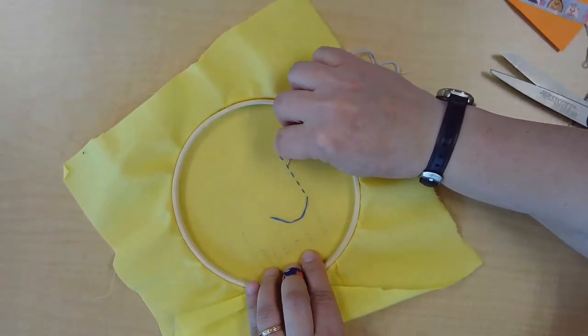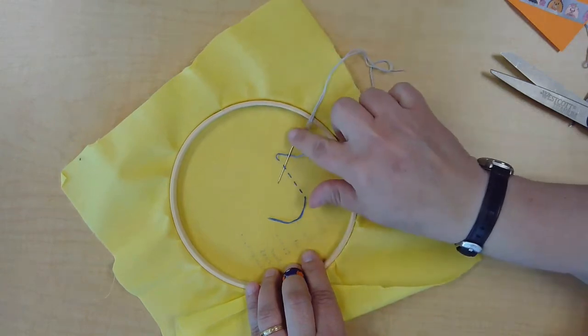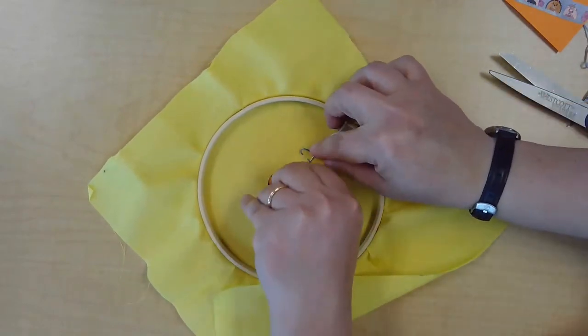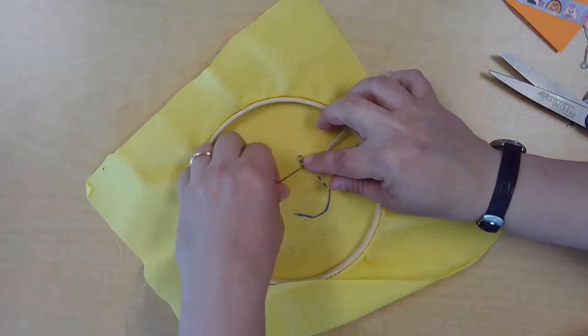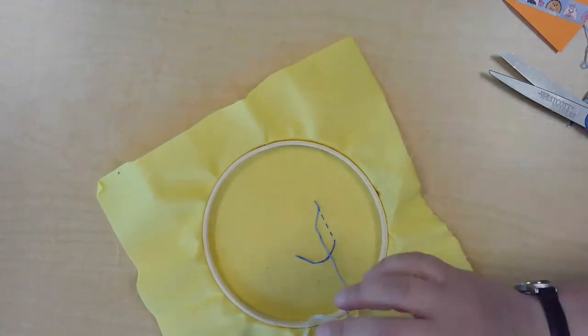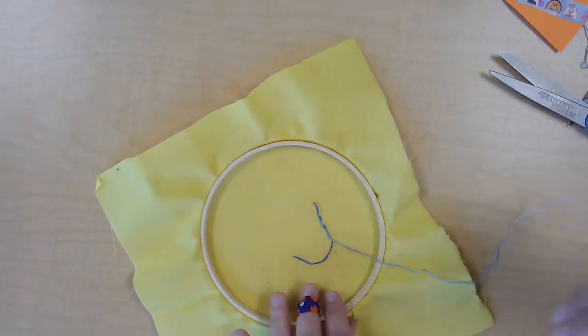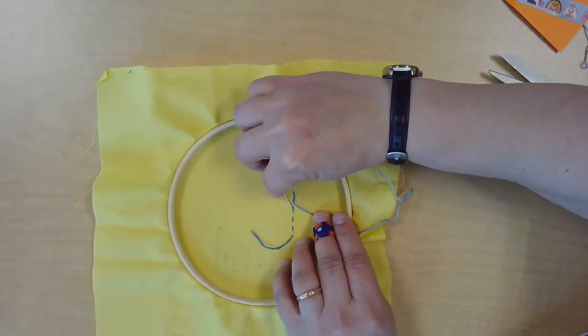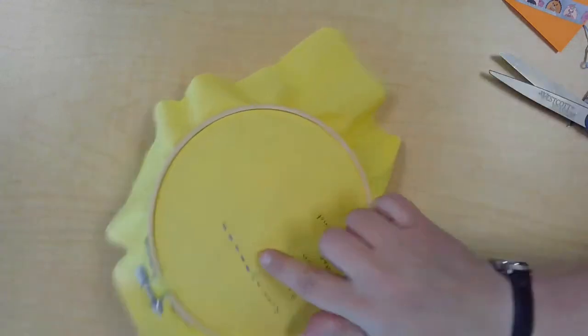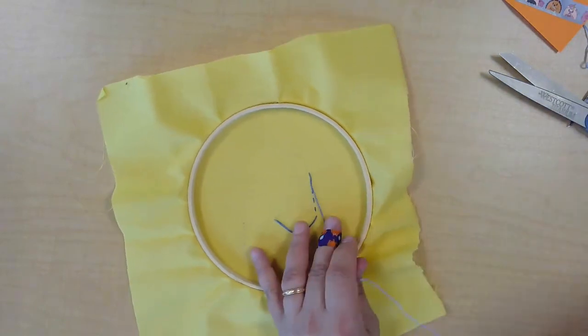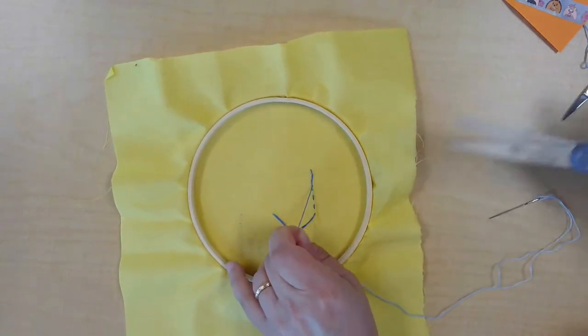Now to finish my stitches, I'm going to slide my needle down underneath the back of a previous stitch, making sure not to poke through the fabric. So this way my stitch doesn't come out of what I've done. It doesn't come undone. And you could do a couple like this, running through the back side of your stitches, just underneath. And you can see it's not showing in the front. And you can just trim it.